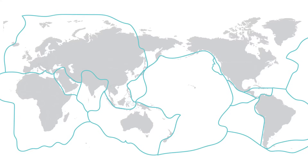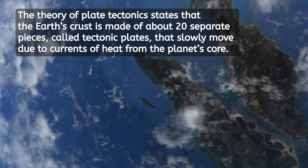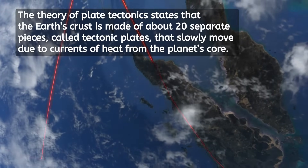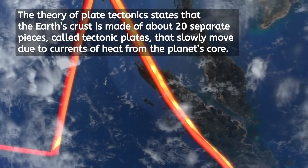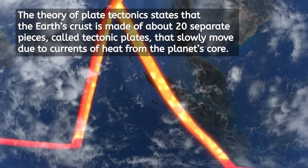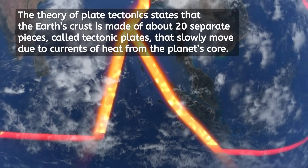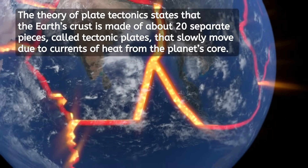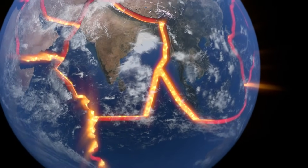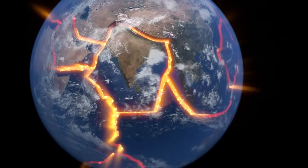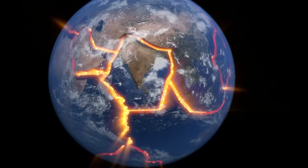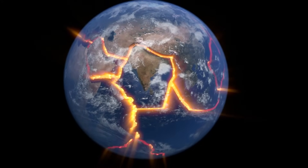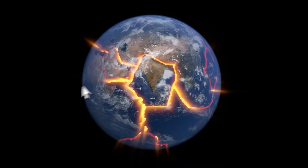By mapping out the lines along which the earthquakes tended to happen, scientists mapped out divisions in the Earth's crust. The theory of plate tectonics states that the Earth's crust is made of about 20 of these separate pieces called tectonic plates that slowly move over time due to currents of heat from the planet's core. So how do you think the theory of plate tectonics changed the way people thought about the theory of continental drift? Pause the video here and write your thoughts in your guided notes.